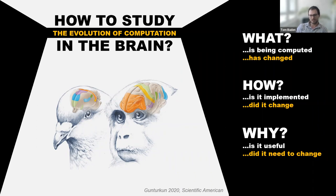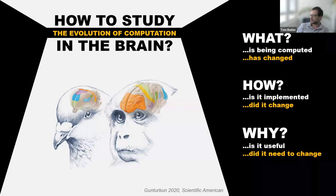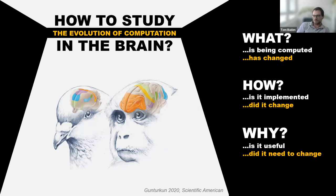Generally when we think about what computation means in a nervous system, there are really three points: the what, the how, and the why. First you want to understand what's being computed — that's usually a descriptive step. Then you want to understand how that comes about at a circuit level, maybe at the level of synapses or entire brain systems. And then the why — why is this useful? When looking at evolution you need to do it more than once: look at at least two systems, compare them, and ask what has changed, how did it change, and why did it need to change.